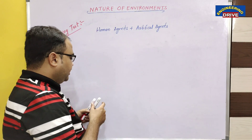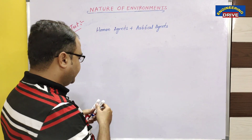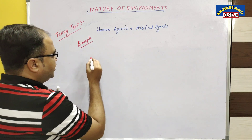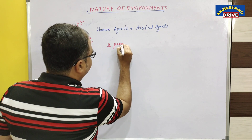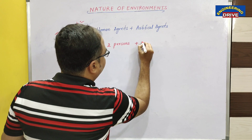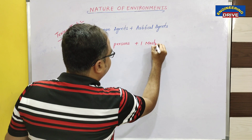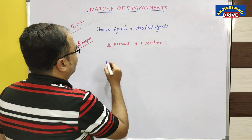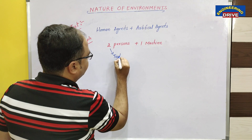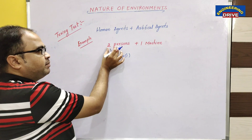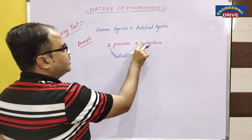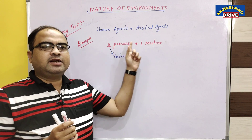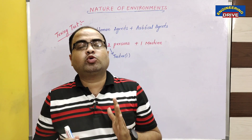Let us conduct the Turing test now and see how it is conducted. In our example, two persons will participate in the test along with one machine — the third entity. So there is one machine and two persons. Out of these two persons, one person is a tester. The remaining one person is a human agent, and the machine is an artificial agent. Finally, we are going to have a competition between one person and one machine, to find out who is intelligent between them.